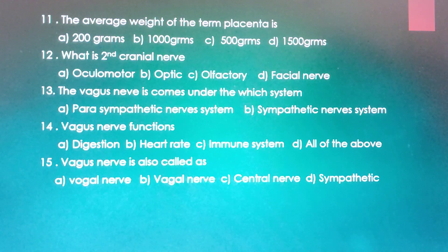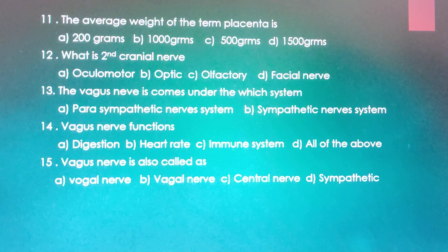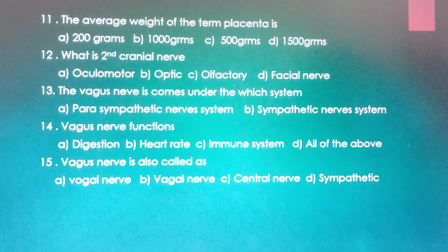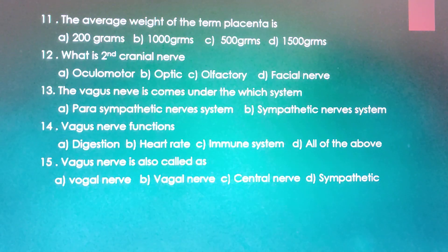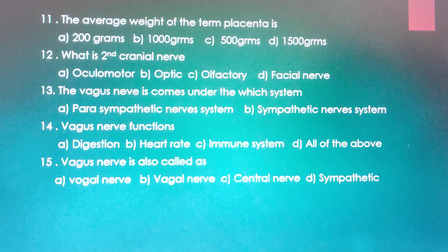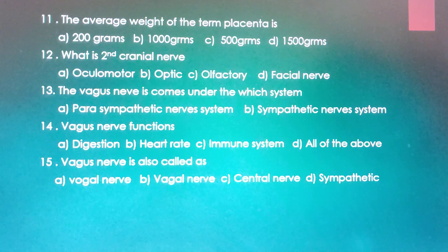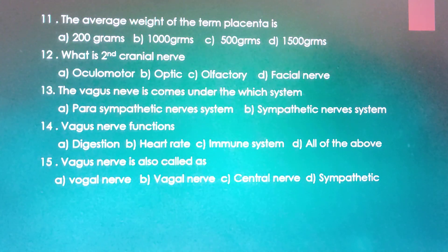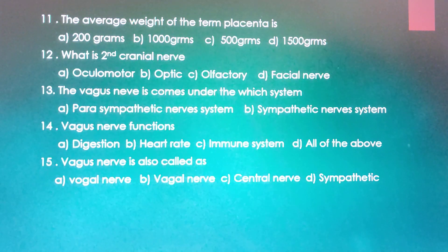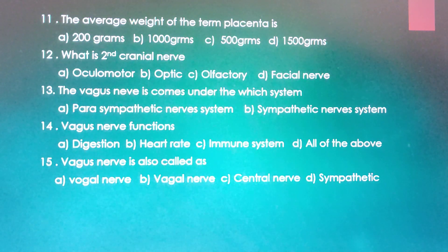What is the second cranial nerve name? Oculomotor, optic, olfactory, or facial nerve. The correct answer is optic. It is the second nerve and it performs the function of vision.